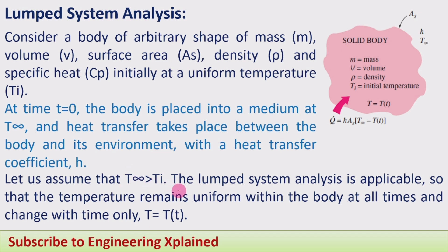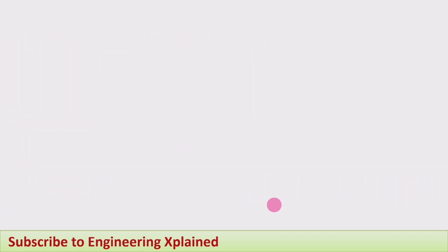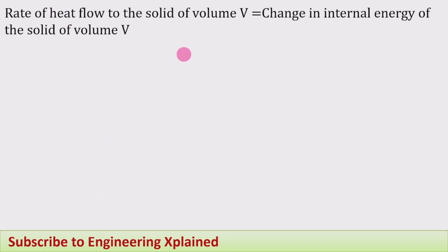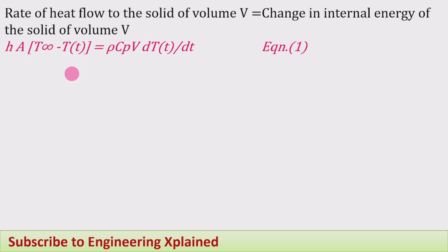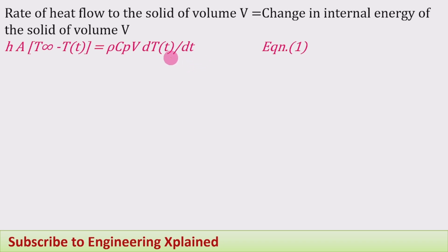The energy balance equation for the solid body states that the rate of heat flow to the solid equals the change in internal energy of the solid. That is: H times A times (T infinity minus T(t)) equals M times Cp times dT(t)/dt, where M equals rho times V. So rho, V, Cp, and the temperature change with respect to time give us dT(t)/dt. This is taken as equation 1.